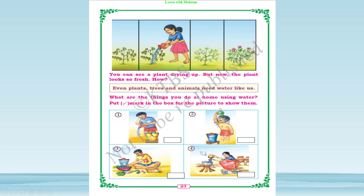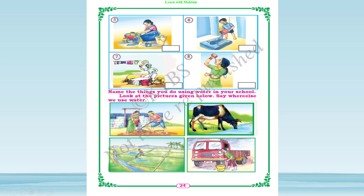What are the things you do at home using water? Put a right mark in the box for the pictures. First, you are washing your face and brushing — for both you need water. For a bath you need water, for washing vegetables, for cooking — tick all of these. Also for washing utensils, in the bathroom, for washing clothes, and lastly for drinking. We need water everywhere.